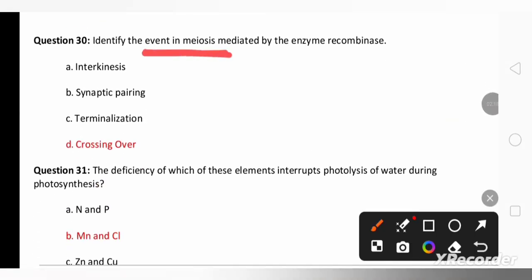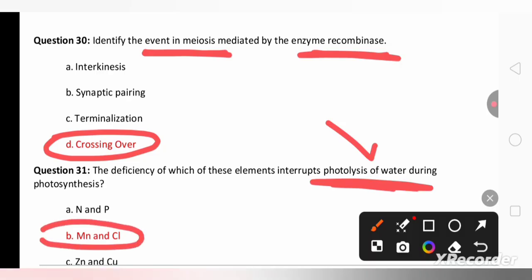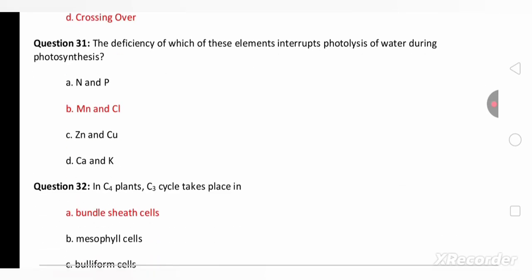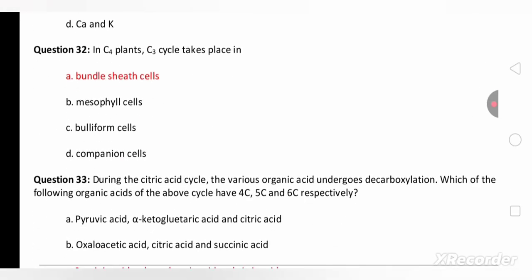Identify the event in meiosis mediated by the enzyme recombinase. Recombinase enzyme takes part in crossing over. The deficiency of which of these elements interrupts the photolysis of water? The deficiency of manganese and chlorine definitely interrupts the photolysis of water during photosynthesis.